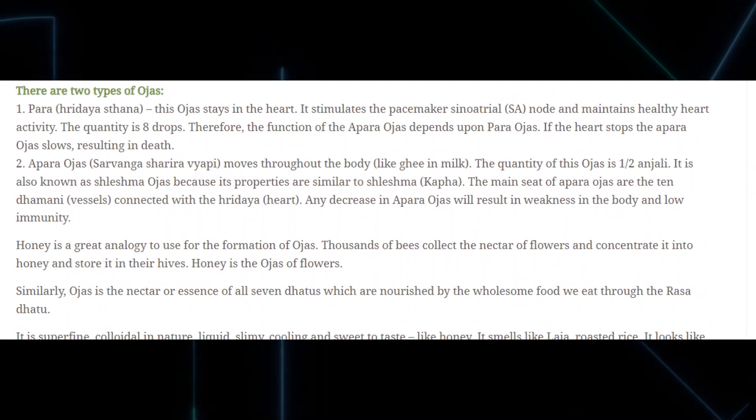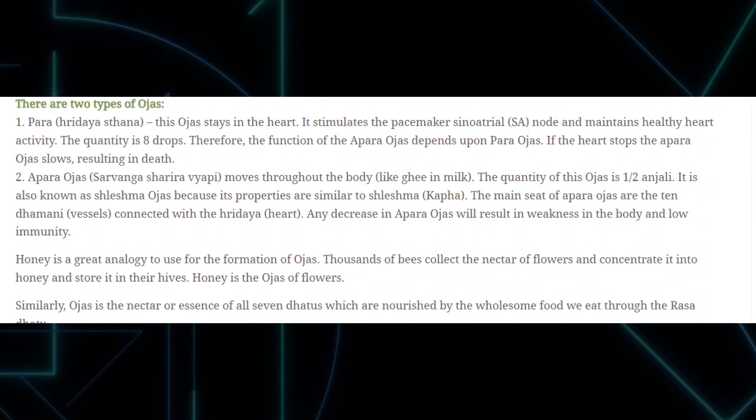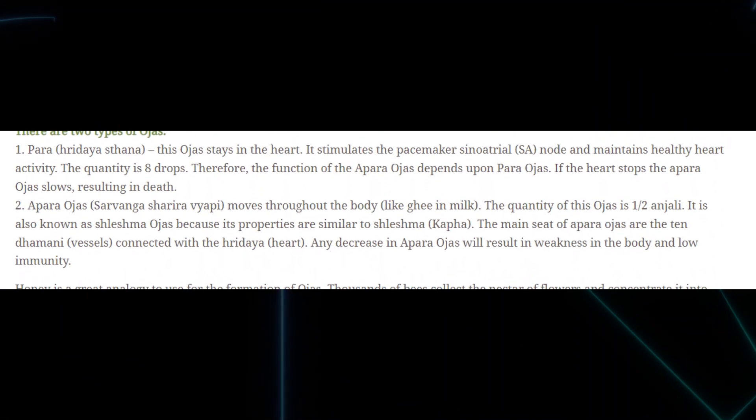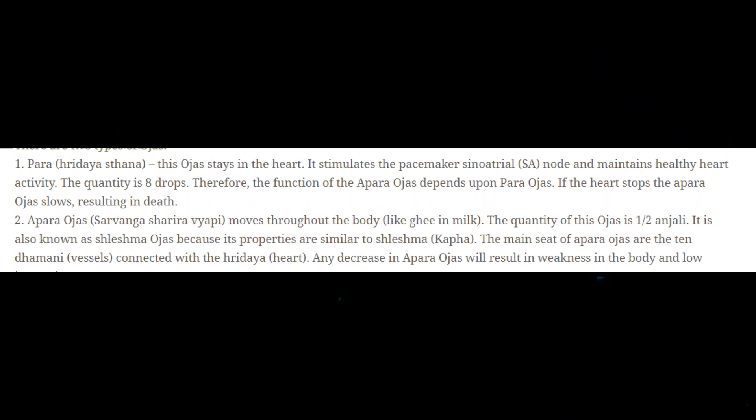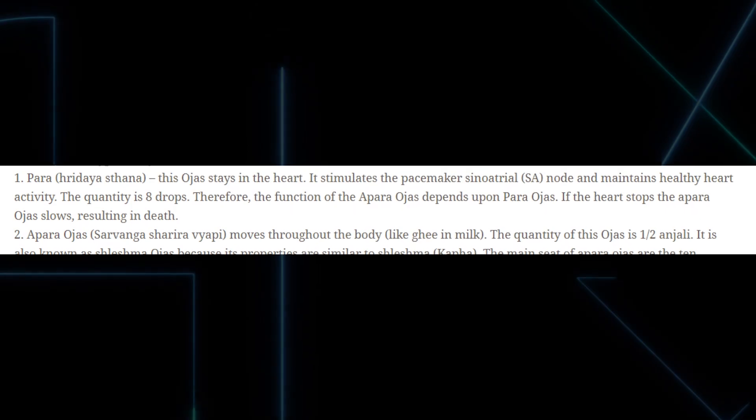Ojas, like everything else we've seen, does not exist, yet the sages have made a detailed description of it. It is supposed to be transparent and yet yellowish-white in color like ghee, taste like honey, and smell — believe it or not — like roasted rice. How very precise. Modern Ayurvedic websites go one step further and equate it to something that stimulates the sinoatrial node — the natural pacemaker of the heart — and they have even found the exact quantity: eight drops. How they get all this information about something that doesn't exist never ceases to amaze me.